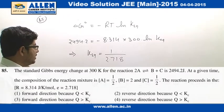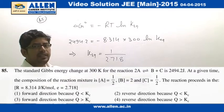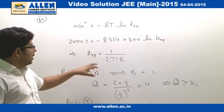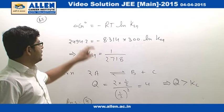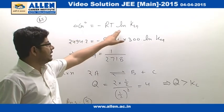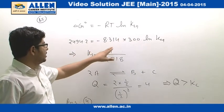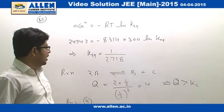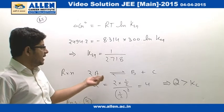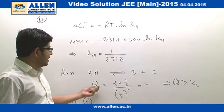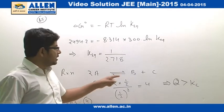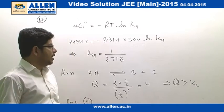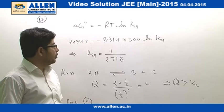Question number 85: is question mein reaction 2A → B + C ke liye standard Gibbs free energy change ka value diya hai, aur yeh value 2494.2 joule hai. Is ki help se hum equilibrium constant calculate kar sakte hain using the equation ΔG° = −RT ln K. Is equation mein value substitute karne par reaction ka equilibrium constant 1/2.718 aa raha hai.